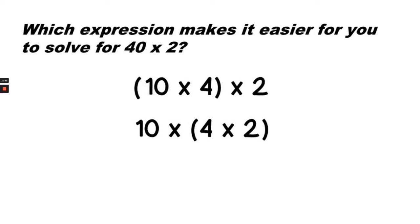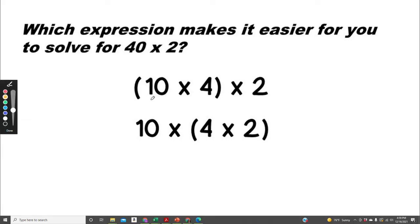Which expression makes it easier for you to solve for 40 times 2? Would it be easier to multiply 10 times 4 and then multiply that product by 2, or would it be easier to multiply 4 times 2 and multiply that product by 10?